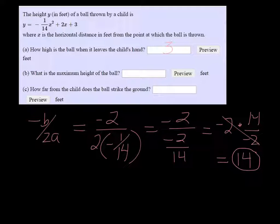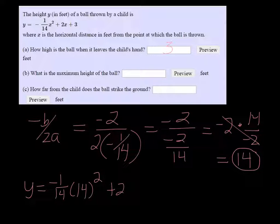Unfortunately, that doesn't give us the height, it only gives us the horizontal distance. So we need to plug that into the function and find the height. The height is y, so y is equal to negative 1 over 14 times 14 squared plus 2 times 14 plus 3.